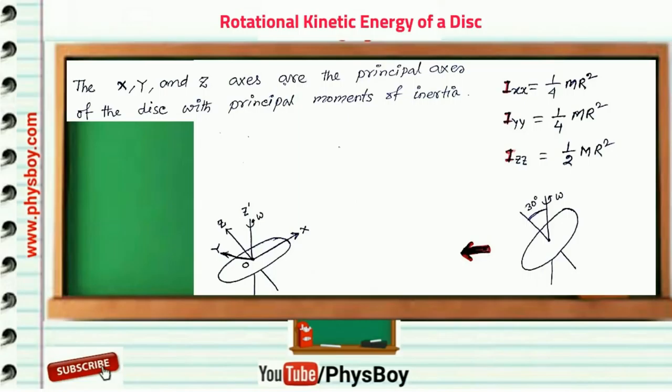And principal moment of inertia about Y axis is Iyy, which is equal to 1/4 MR squared. Both are equal because of the symmetry. And principal moment of inertia about Z axis is Izz, which is equal to 1/2 MR squared.